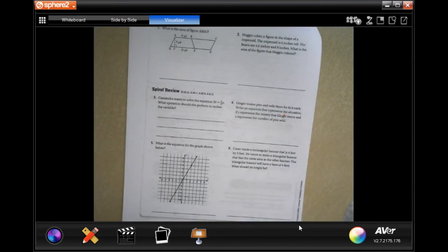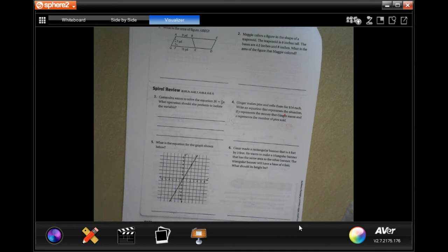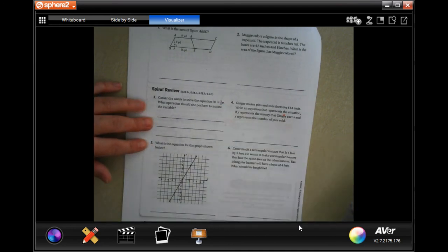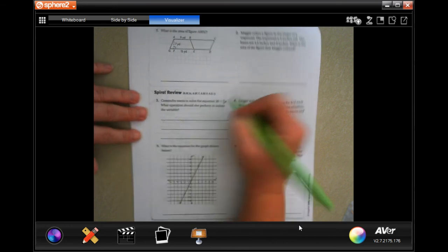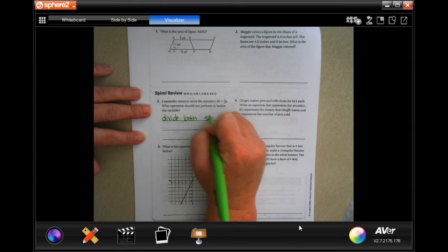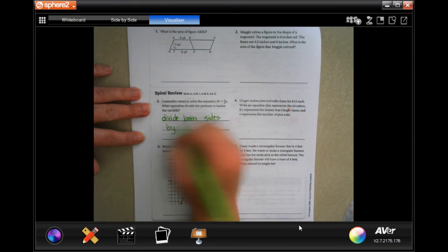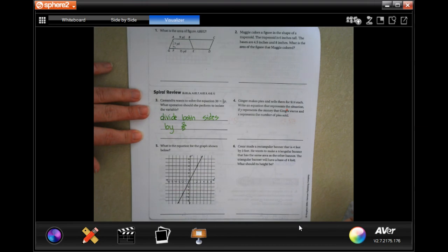All right, now we're going to go into the math, where you guys are going to do a question check, and we're going to do a spiral review. So spiral review says, Cassandra wants to solve the equation 30 equals 2 fifths p. What operation should she perform to isolate the variable? So remember, when we need to get the variable alone, we do the opposite. Well, when you have a number next to a letter with no sign in between, it means multiplied. So the opposite is to divide. So she will divide both sides by 2 fifths.